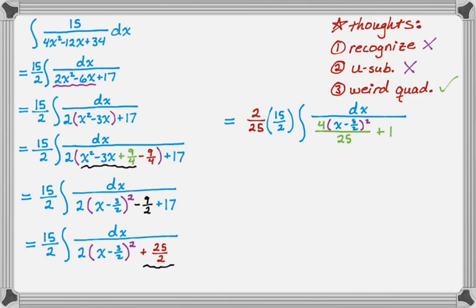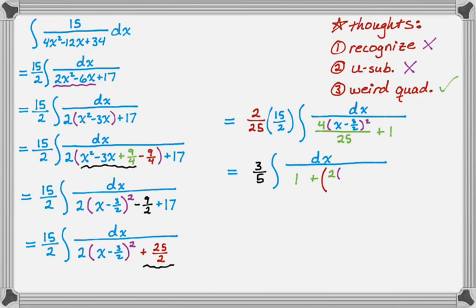This looks almost exactly like arctan. I'm going to rearrange it so it looks how I prefer. This 2 over 25 and 15 halves cancel, leaving 3 fifths. I still have dx. I like to think of arctan as dx over 1 plus x squared, so I put the 1 first, and then this is a perfect square, so I write it as (2 times the quantity x minus 3 halves, all over 5) squared. You can see that's equivalent.